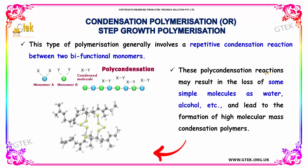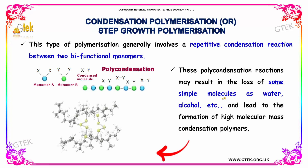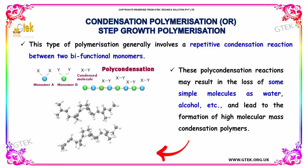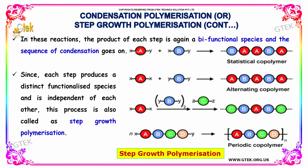These polycondensation reactions may result in the loss of some simple molecules such as water, alcohol, etc., and lead to the formation of condensation polymers. In these reactions, the product of each step is going to be a bifunctional species, and the sequence of condensation goes on. Since each step produces a distinct functionalized species and is independent of each other, this process is also called Step Growth Polymerization.